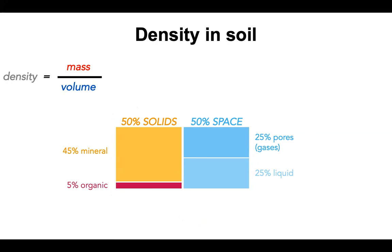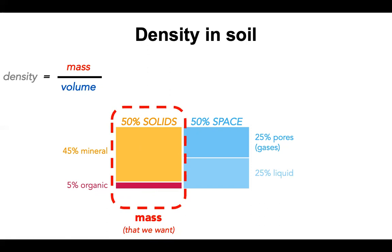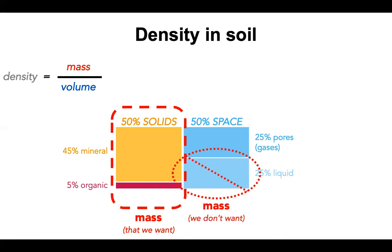When we think about mass in soil, it gets a little more complicated in terms of how we measure it. The mass we're interested in is the solids — the mineral and organic portions. But there is liquid still in soil, so we need to figure out a way to get rid of that liquid, because that's not mass we're really interested in when talking about bulk density. We need to eliminate the liquid portion.